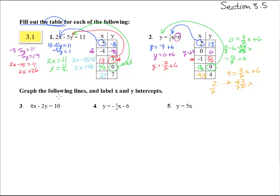Number 3, we're supposed to graph the following lines and label x and y intercepts. So here, with the x and y intercepts, we've got to pick y equals 0 and then x equals 0. We have to do that to get those two points.